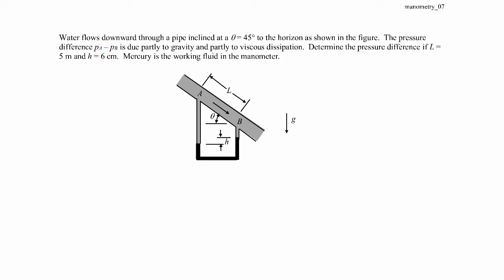We're asked to find the pressure difference between A and B, so PA minus PB, if we're told that L, this distance, is 5 meters and H, this distance, is 6 centimeters, and mercury is the working fluid in the manometer. So this is mercury here, and the lighter grade stuff is water.